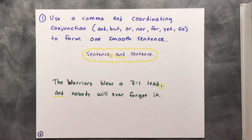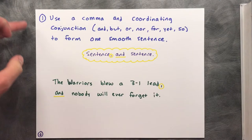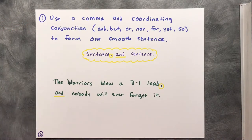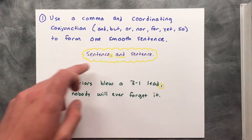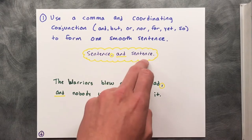Now you know how sentences can become run-ons and comma splices — how do you avoid or correct them? There are four basic methods. The first method is to use a comma and a coordinating conjunction, like and, but, or, nor, for, yet, and so, to form one smooth sentence: sentence, comma, conjunction, sentence.